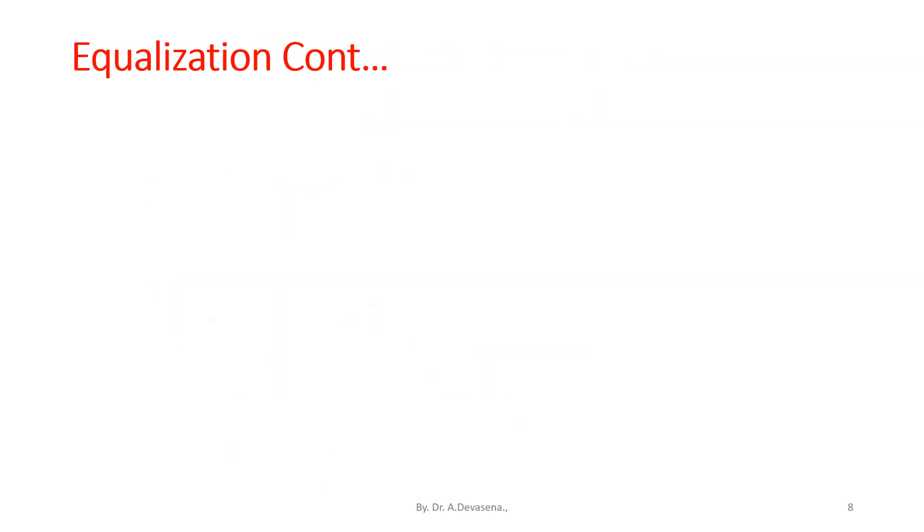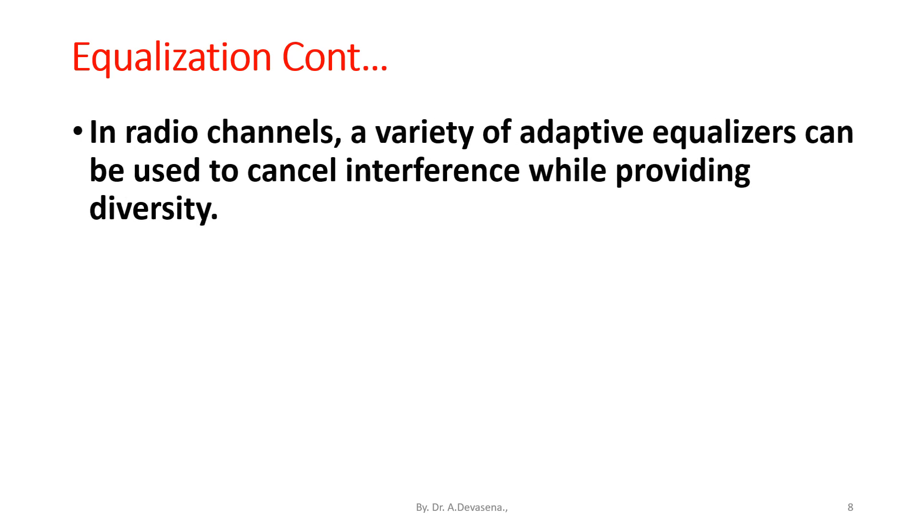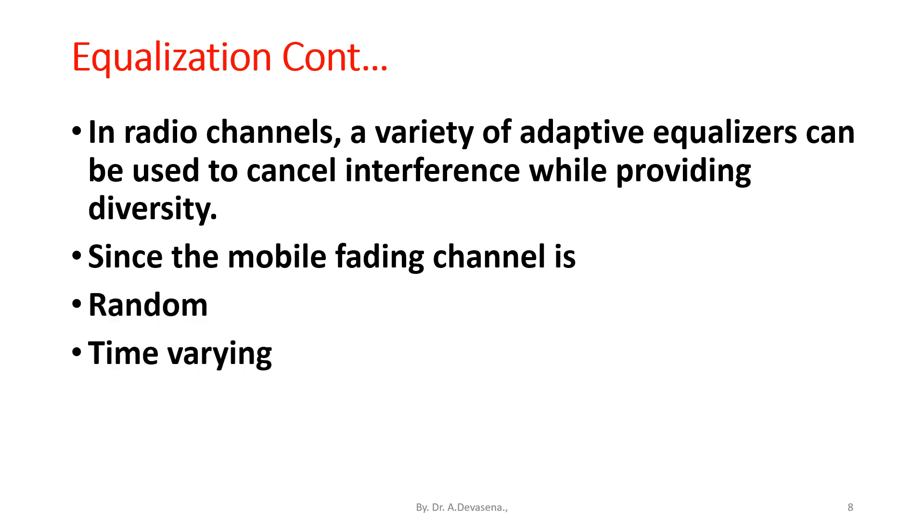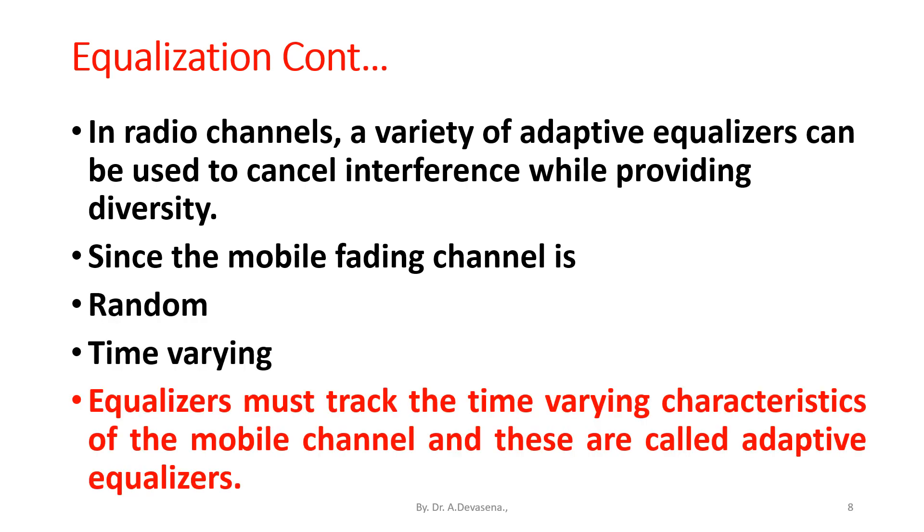In radio channels, a variety of adaptive equalizers can be used to cancel interference while providing diversity. Since the mobile fading channel is random and time-varying, equalizers must track the time-varying characteristics of the mobile channel. And these are called adaptive equalizers.